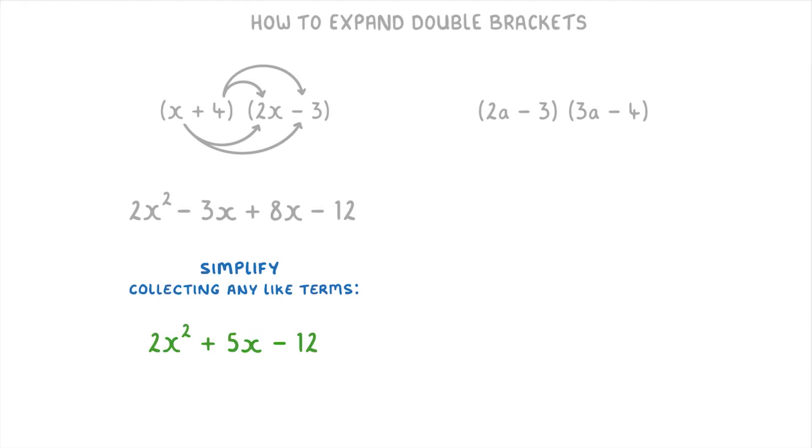For this next question, we need to multiply 2a minus 3 by 3a minus 4. So again, we can start by drawing our arrows to indicate which things we're going to need to multiply. So the 2a needs an arrow to the 3a and the minus 4, and the minus 3 also needs arrows to the 3a and the minus 4.